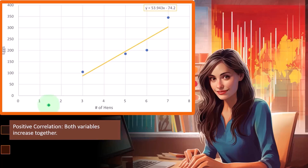we have on the x-axis the number of hens. So at three hens, we had around 100 eggs. At five hens, we had a little under 200 eggs. Six hens are at 200, seven hens we have up here getting close to 350.